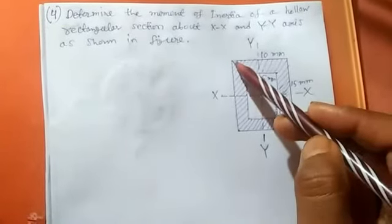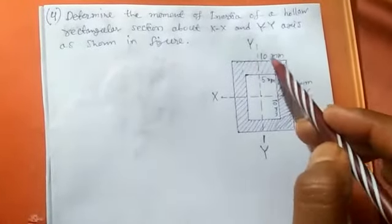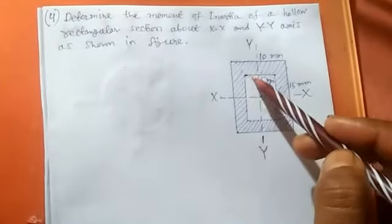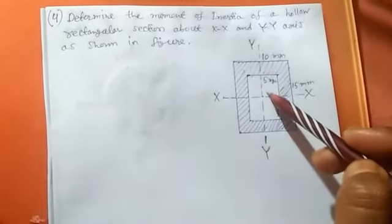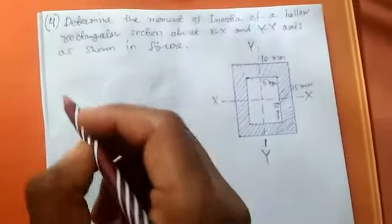The width of the outer rectangle is 10 mm and depth of outer rectangle is 15 mm, and width of inner rectangle is 5 mm and depth of inner rectangle is 10 mm. So here we write the dimensions.